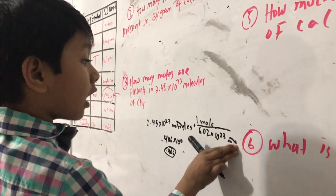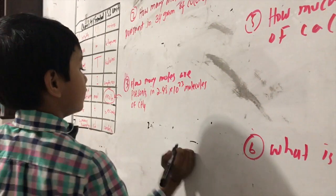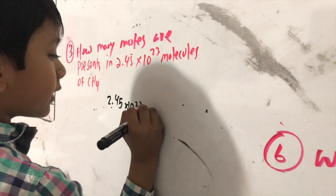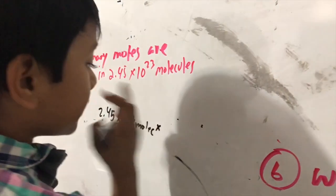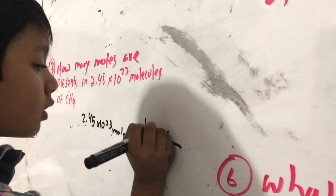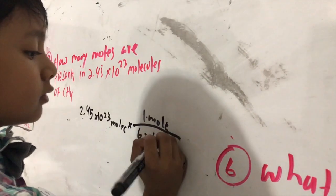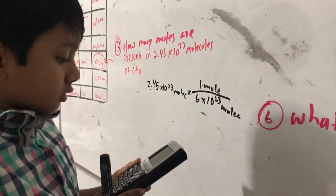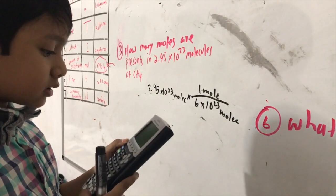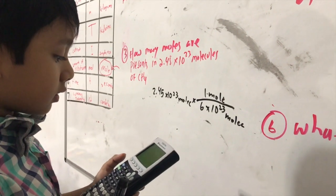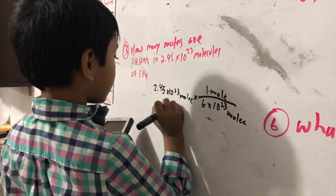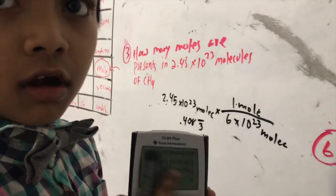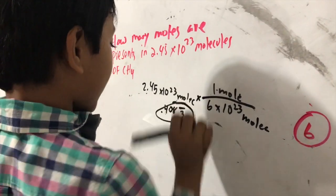Now let's not forget about the answer for dumb people. So 2.45 times 10 raised to the 23 molecules times 1 mole divided by 6.02 times 10 raised to the 23rd molecules. So 2.45 divided by 6 is 0.408. And then it has repeating 3's after. That's the answer for dumb people.